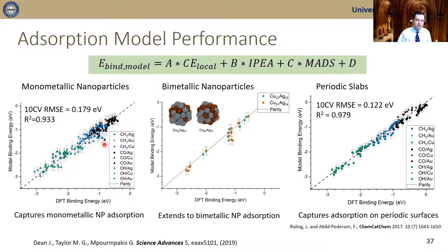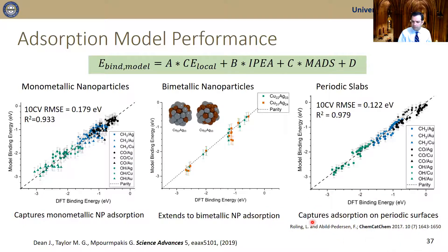When we train and test our model on monometallic nanoparticles, it does a very good job predicting trends across different adsorbates and nanoparticles of different compositions. We then trained on monometallic nanoparticles and tested on bimetallic nanoparticles the model had never seen — and it can predict adsorption trends on bimetallics. We also tested using data from Röling and Peterson on periodic DFT calculations of adsorption on periodic surfaces, and the model does very well there too.